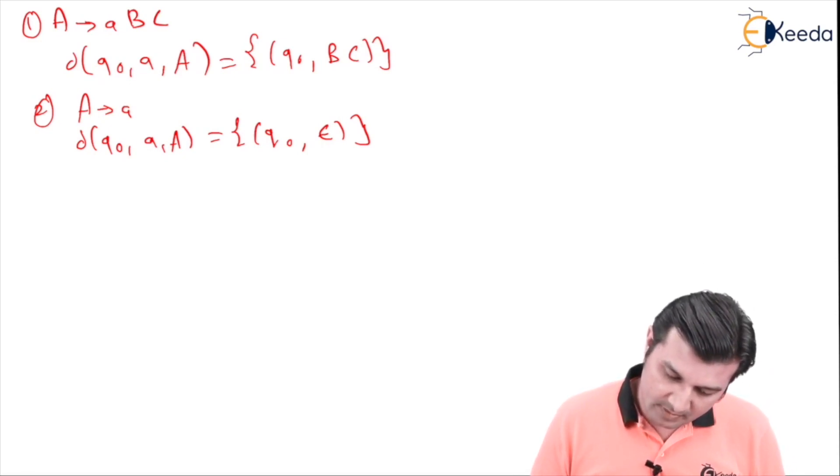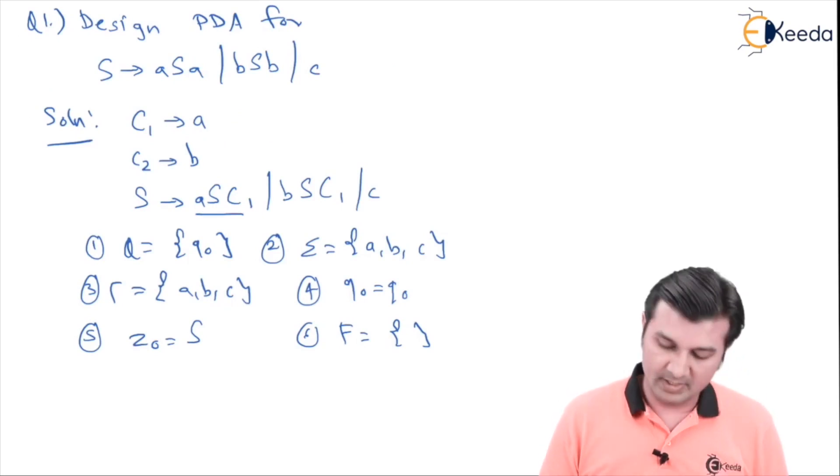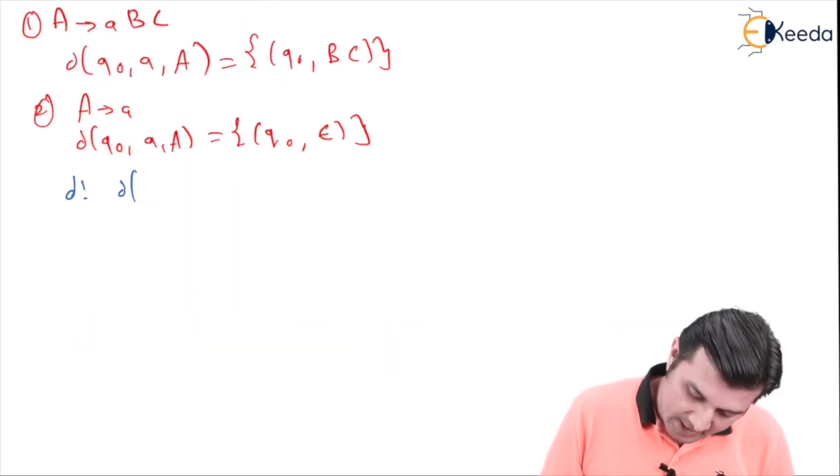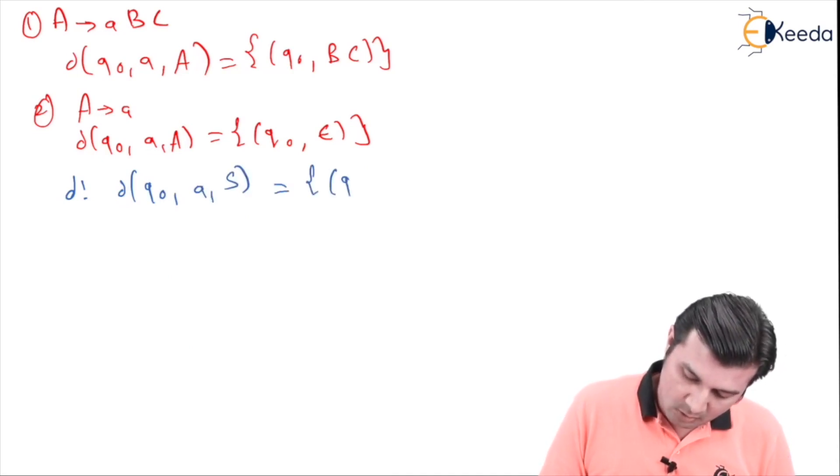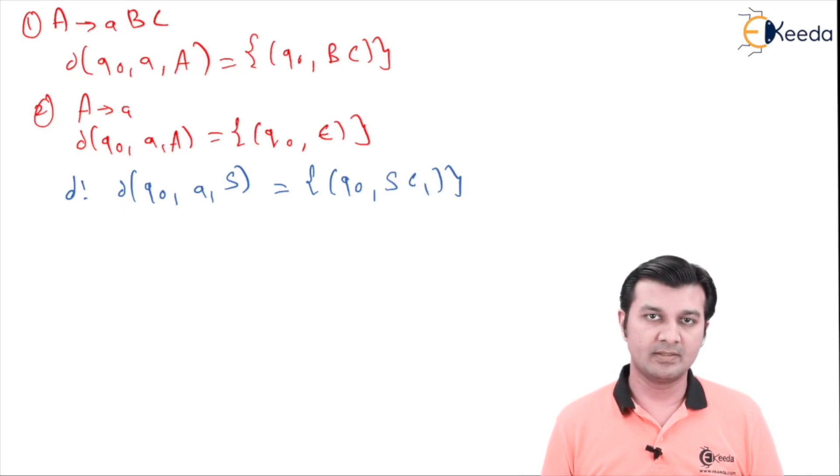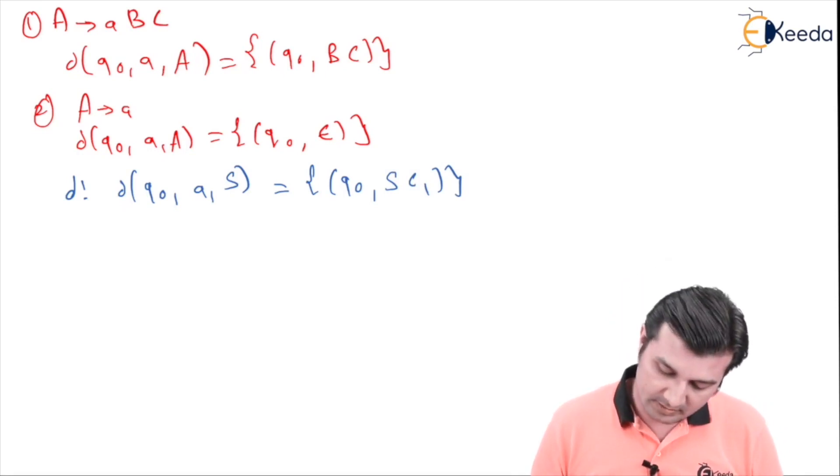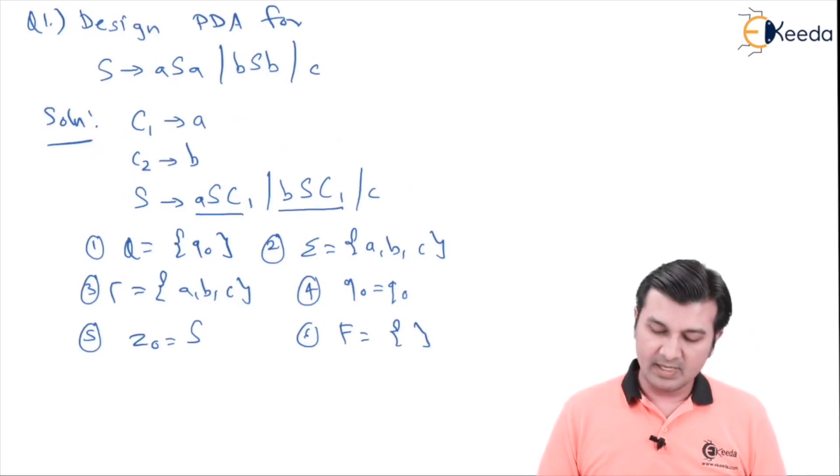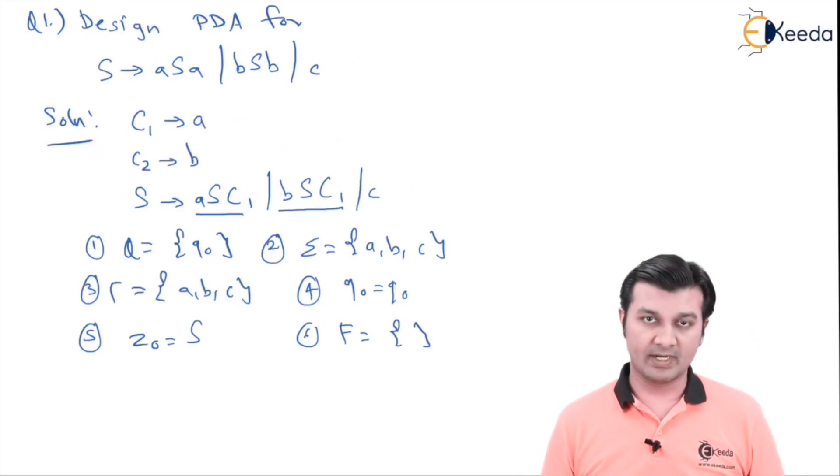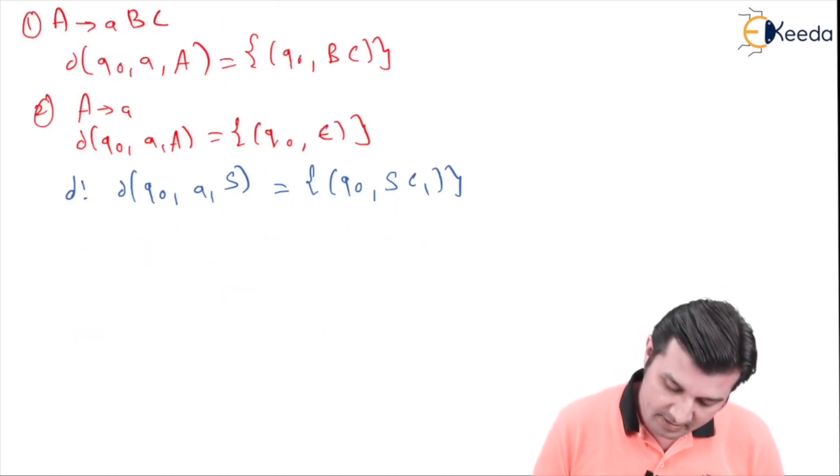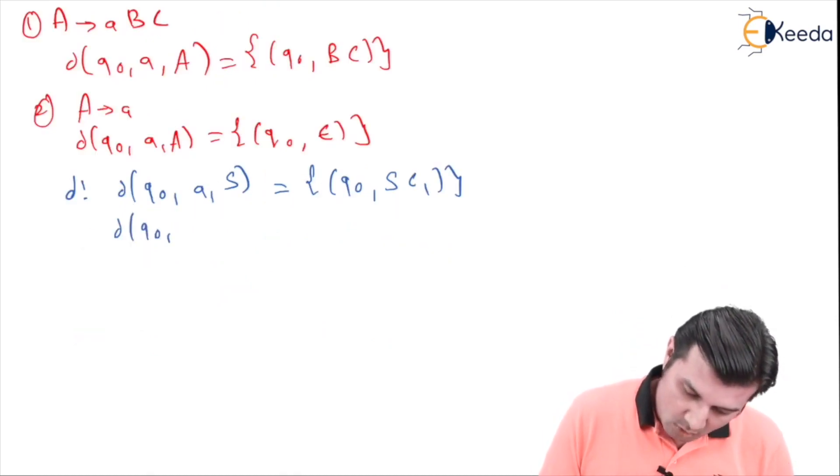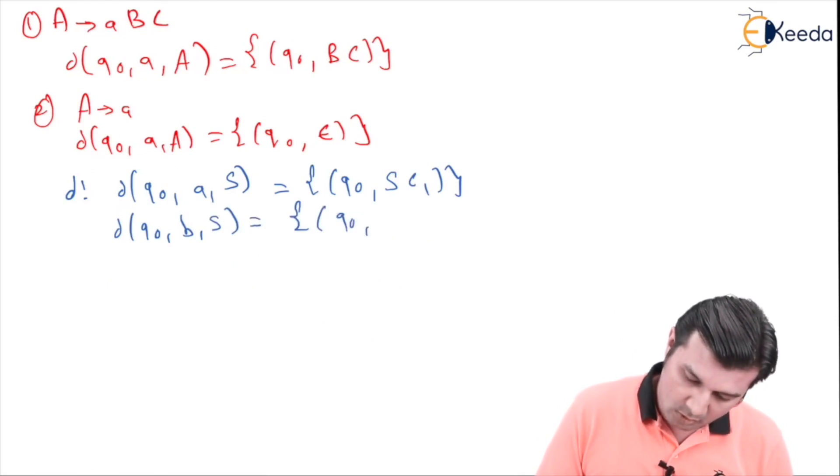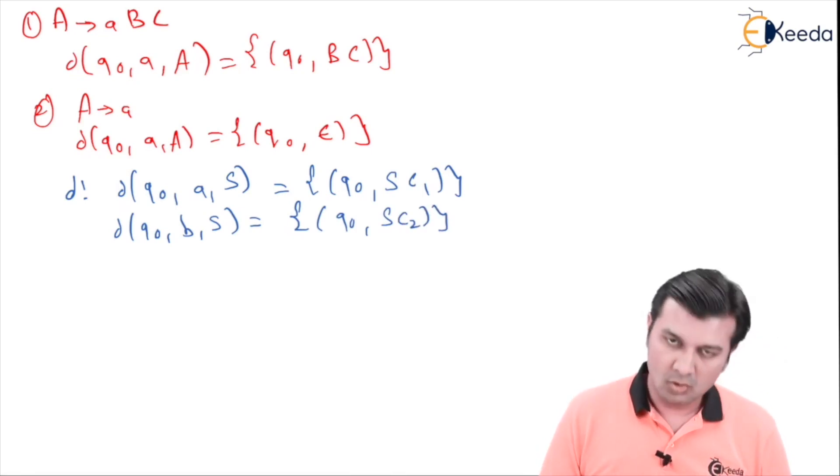Start with the problem now. For the first production we have, this one: S gives a SC1. Del q0 on a when the stack top is S goes to q0 and I have SC1 on the stack. Next for the second production, which is this S gives b SC1, again using rule 1, I say q0 on b when the stack top is S goes to q0 and I have SC2 on the stack.